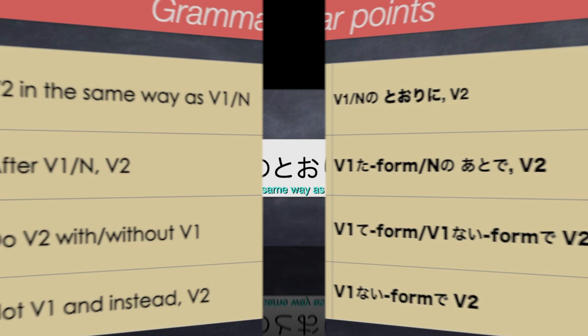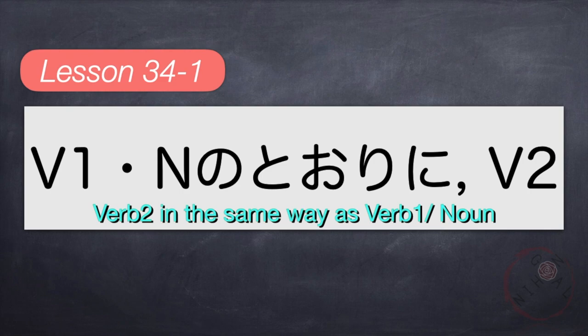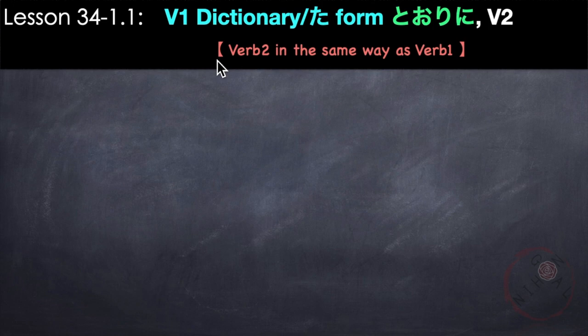Here are the grammar points for today's lesson. The first one is verb 1 or noun no tori ni verb 2, which means 'do verb 2 in the same way as verb 1 or noun' — meaning to do or copy exactly what someone has seen, heard, learned, and so on. Dictionary form is used when the action is going to happen from now on, while ta form is used when the action already happened.